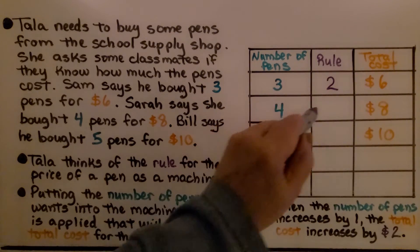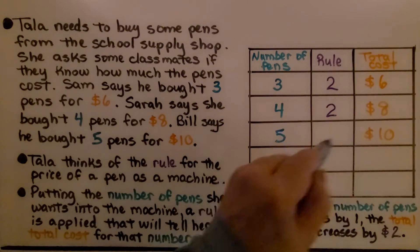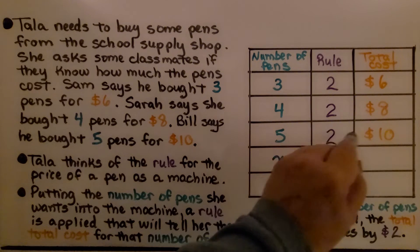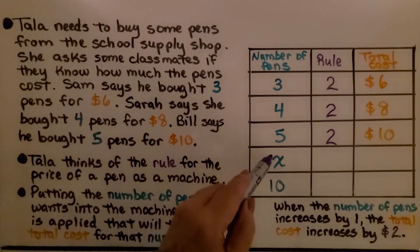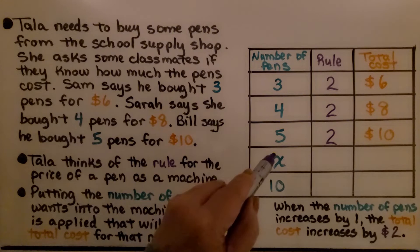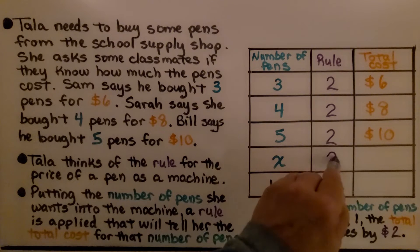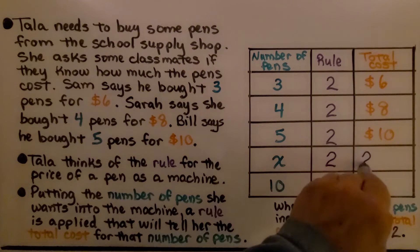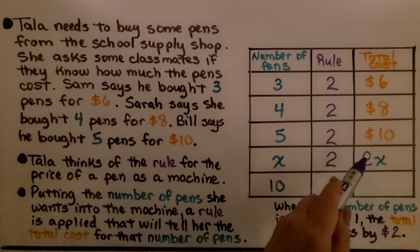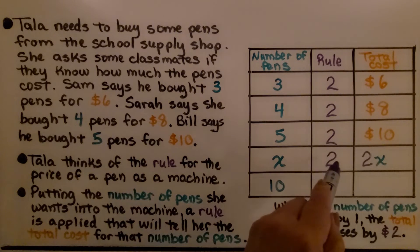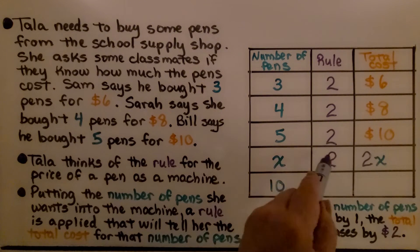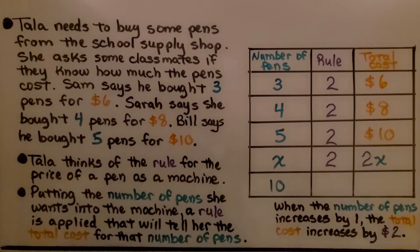3 times 2 is 6, 4 times 2 is 8, 5 times 2 is 10. Here now we have an unknown number of pens. We know that if we multiply it by 2, we will have 2x. We can multiply any number x by that 2 and we will have the total cost.